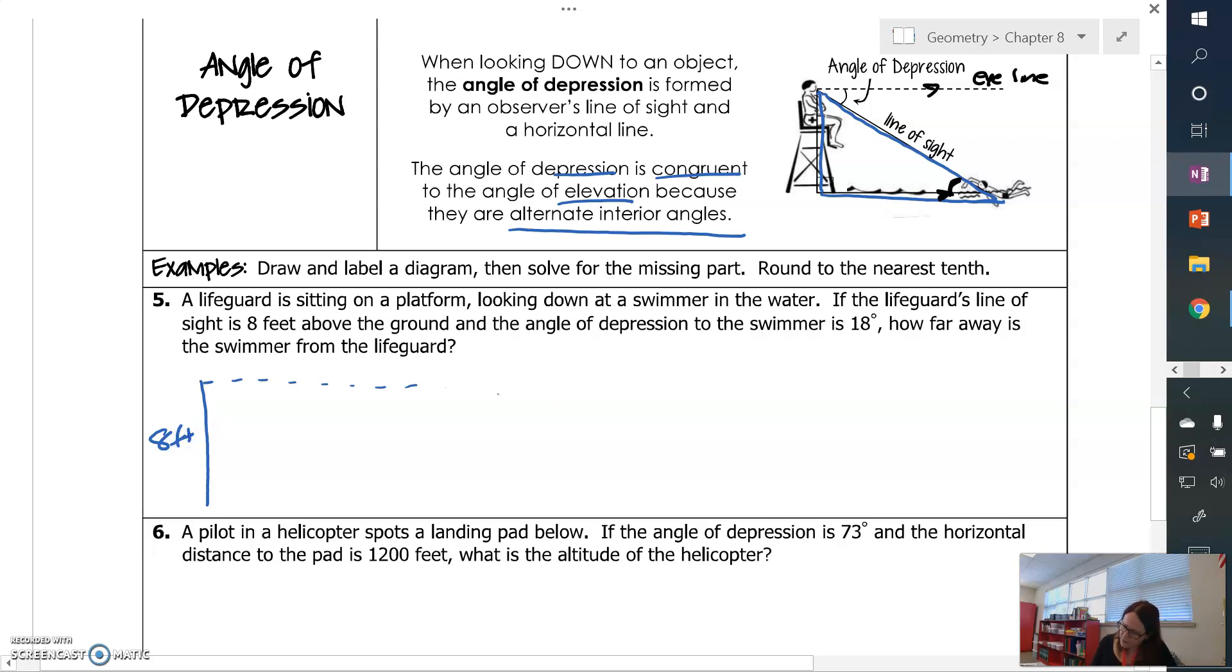And the angle of depression to the swimmer is 18 degrees. So right here is our swimmer. Here's the lifeguard up here. This is 18 degrees. So here's my triangle. Now the 18 degrees is going to be congruent with this angle in here. Which is actually the swimmer's angle of elevation looking at the lifeguard.